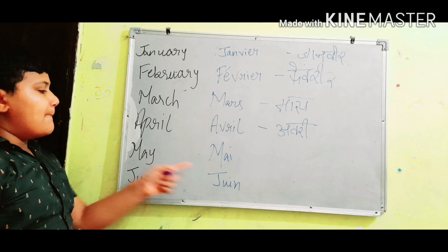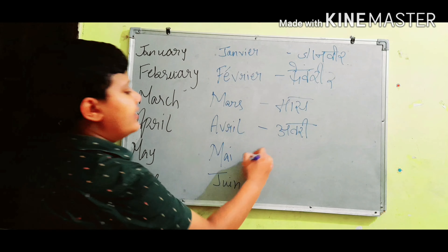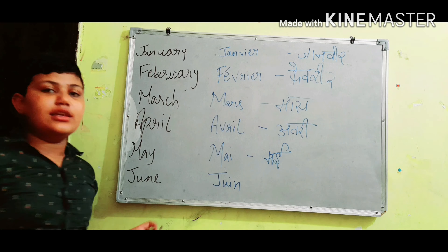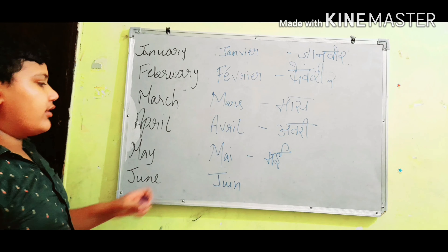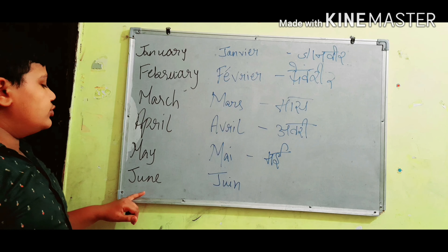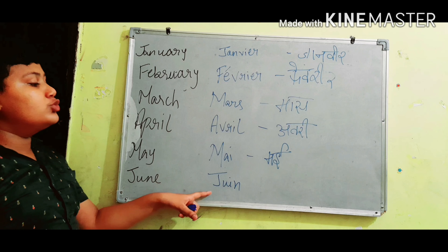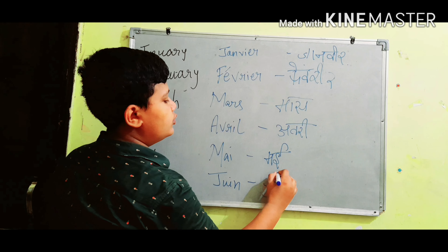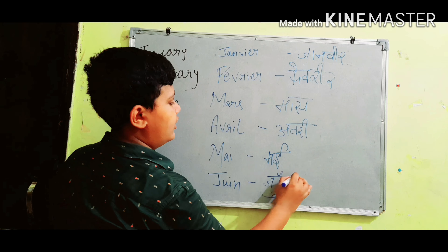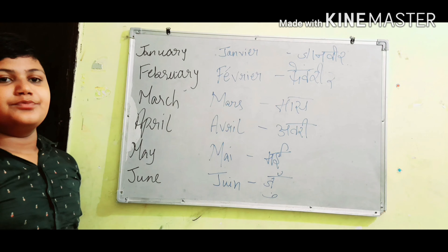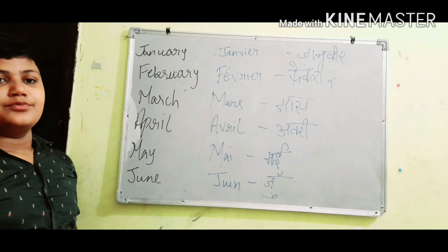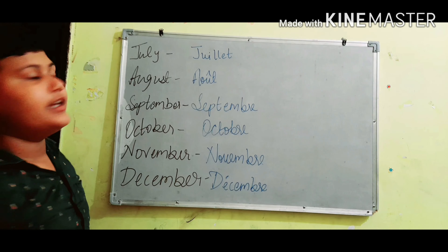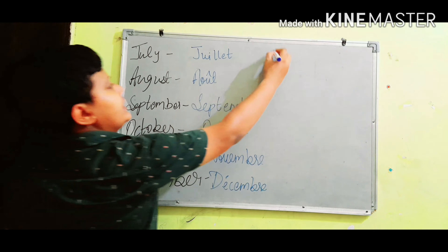May is mai — same as how you pronounce your name, mai, same in French. June is juin — juin. July, which is called juillet — juillet.